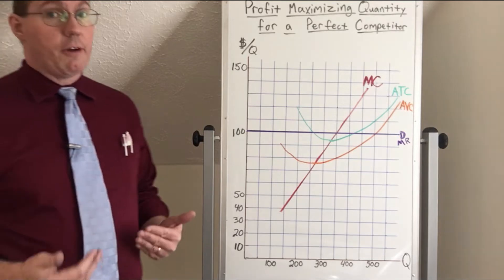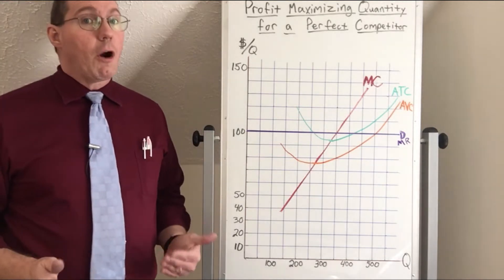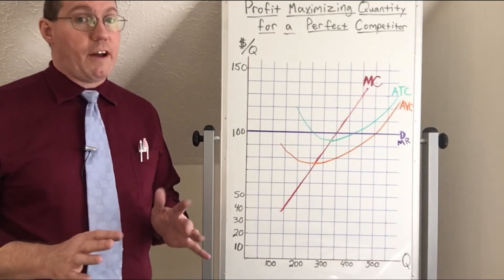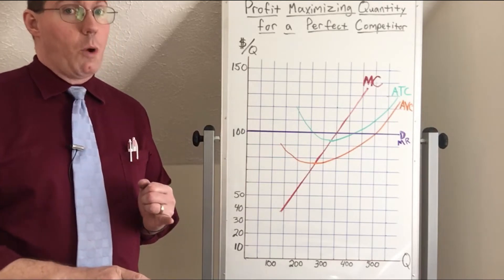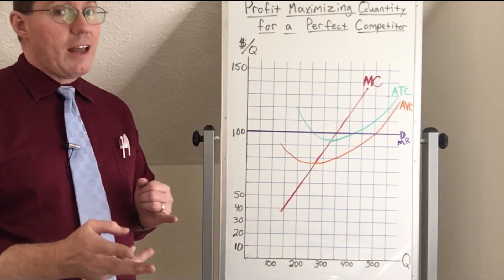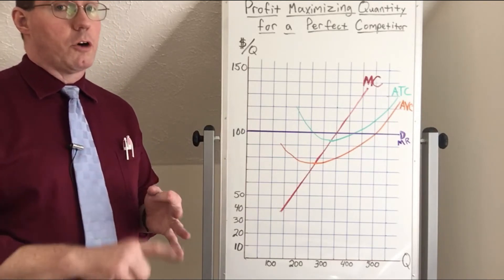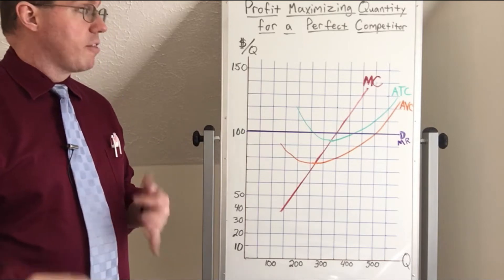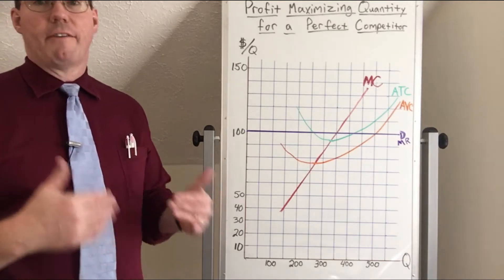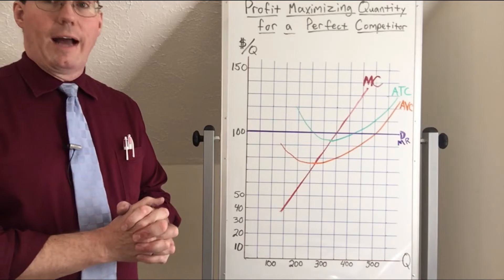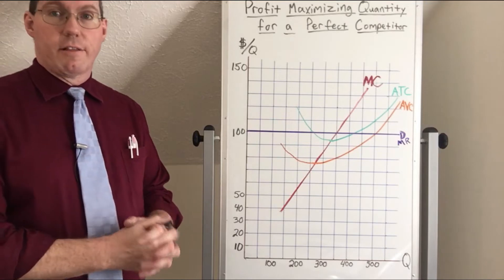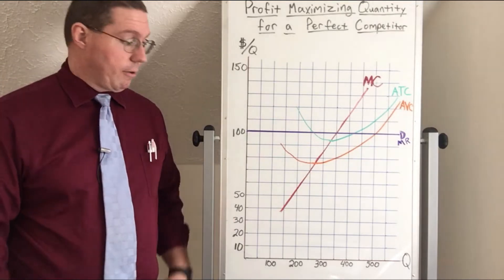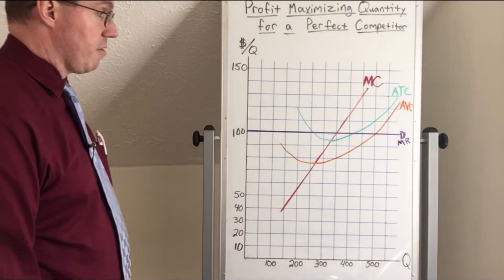Obviously they're not going to decide on the price because they are price takers. So all we're going to identify here is the profit maximizing quantity, then we're going to identify the average total cost, the average variable cost, then the average fixed cost, and we can also identify things like the total revenue and the profit — just like we did previously.